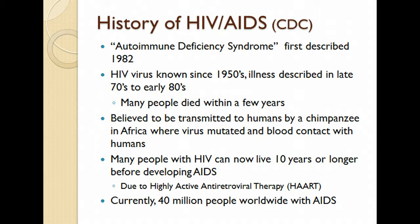Originally they believed it was a virus from Africa, originally in chimps, that mutated when blood was in contact with humans. HIV now is more of a chronic illness, and many people can live 10 years or longer before developing AIDS, due to antiretroviral therapy or highly active antiretroviral therapy. There are 40 million people worldwide living with AIDS.